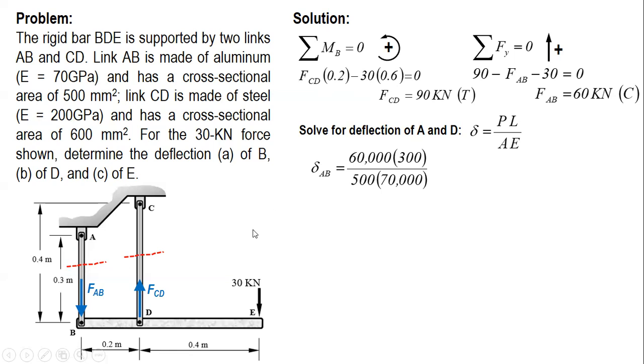0.3 meters is 300 millimeters. The area is 500. E is 70 giga, so we will multiply it by 1,000 for megapascal. And the unit of delta is in millimeters. 0.5143 mm shortening. Shortening, since the internal force is compression.